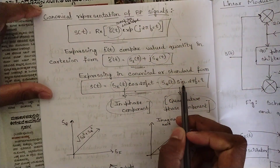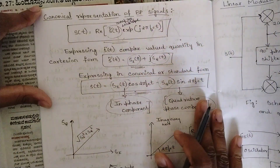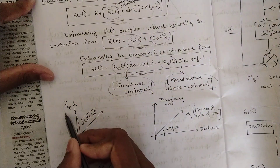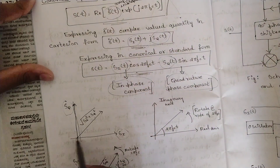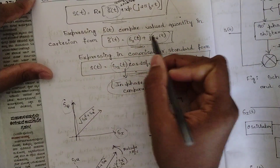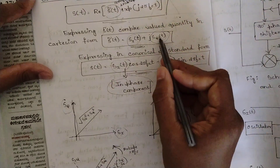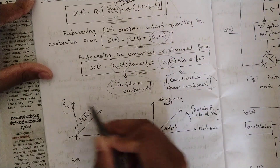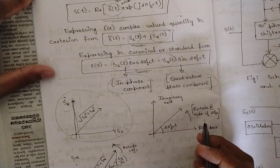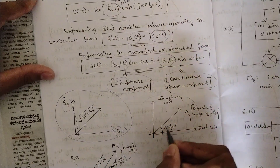Expressing this in Cartesian form, we have an imaginary axis and a real axis. s_q(t) lies on the imaginary axis and s_i(t) lies on the real axis. To calculate the magnitude, we take the square root of the real part squared plus the imaginary part squared — that is, square root of s_i² plus s_q². This magnitude line is shown in the plot, which is with respect to the in-phase.